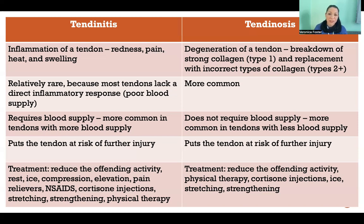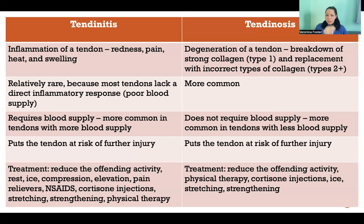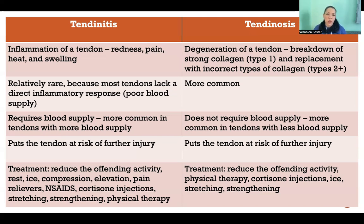As long as you keep doing the activity too much, the inflammation or the degeneration is just going to continue down that same road. For tendinitis, the standard RICE — rest, ice, compression, elevation — can be helpful because it'll help bring down the inflammation. But that's not going to be as effective for tendinosis because the problem there is not inflammation.